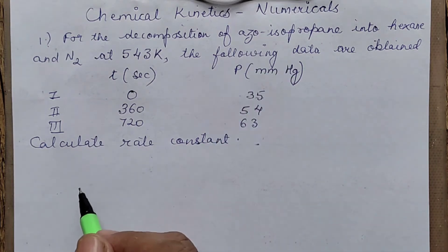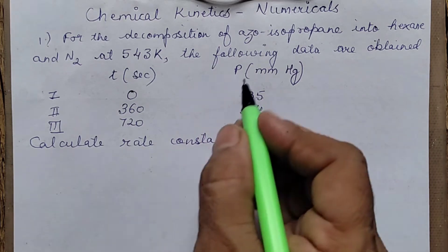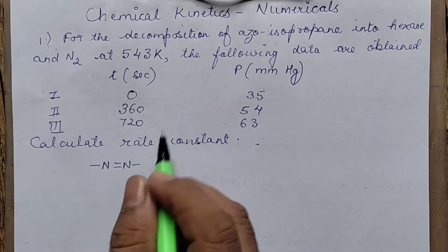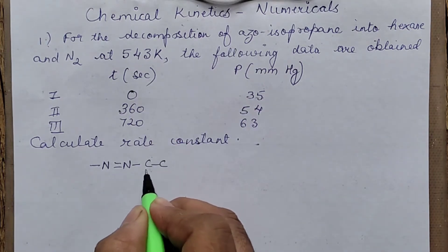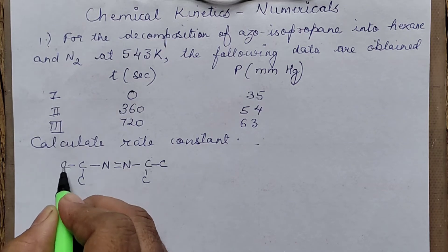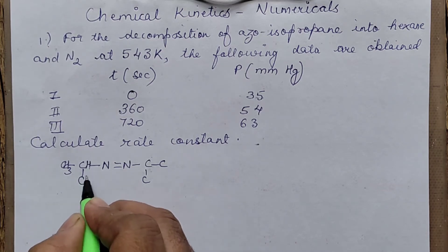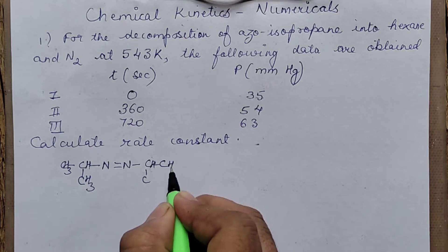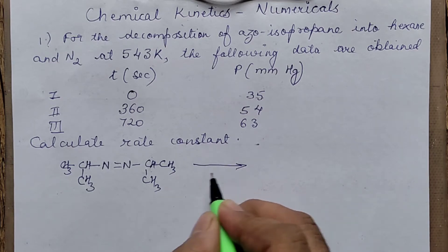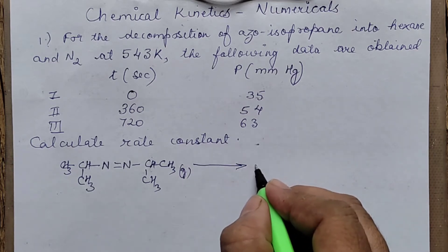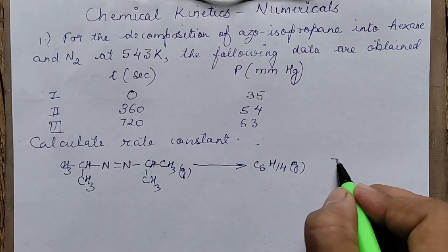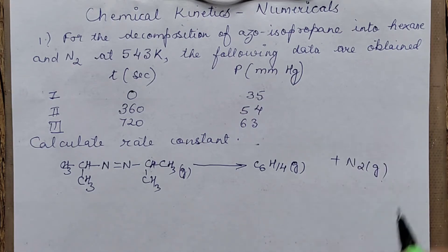Let's write the equation. Azoisopropane — the azo group is N=N. Completing the valencies: CH₃-CH(CH₃)-N=N-CH(CH₃)-CH₃. This is azoisopropane undergoing decomposition in the gaseous state. It gives normal hexane (C₆H₁₄), a straight chain, and nitrogen gas.